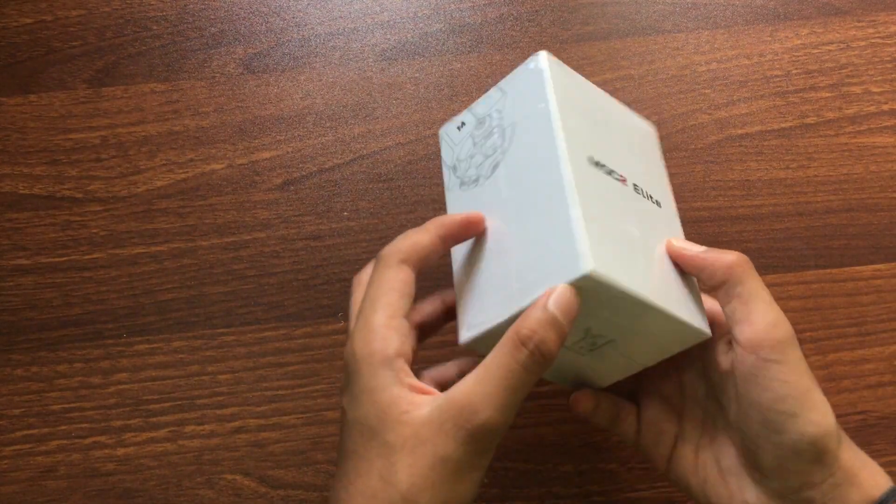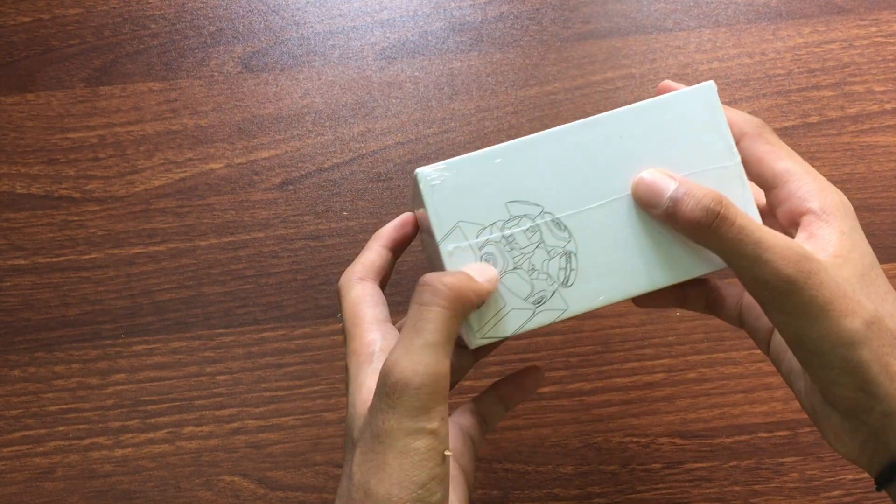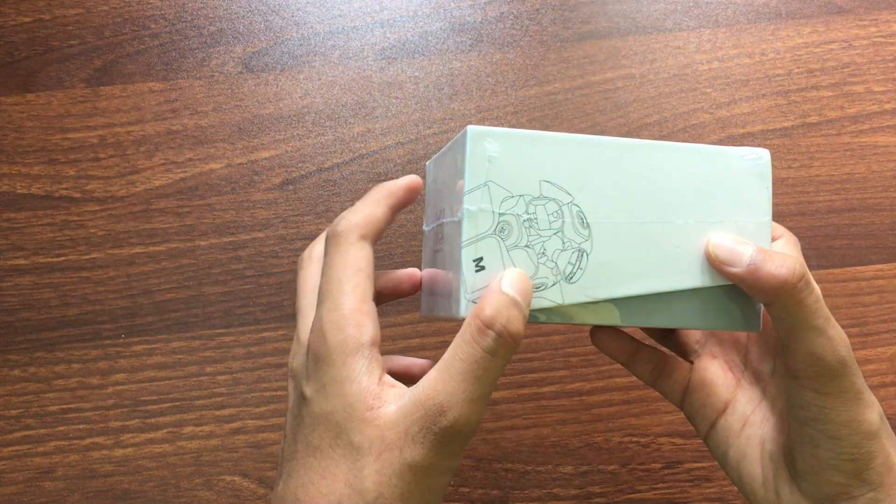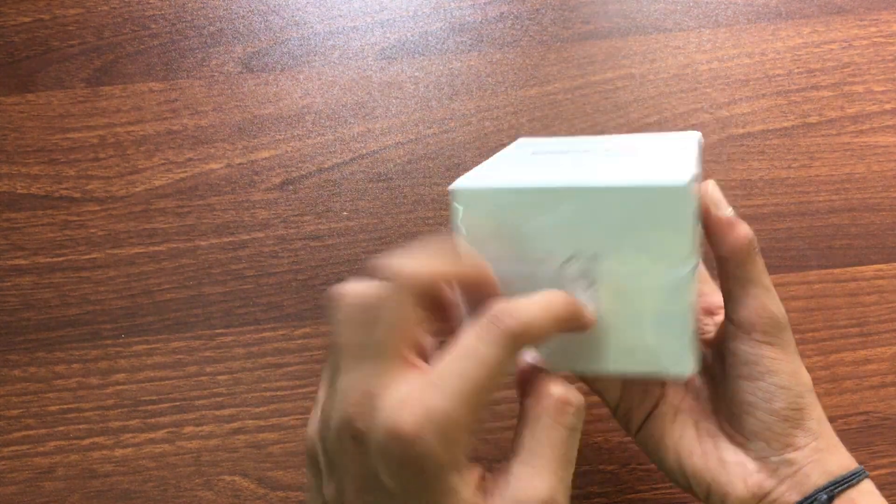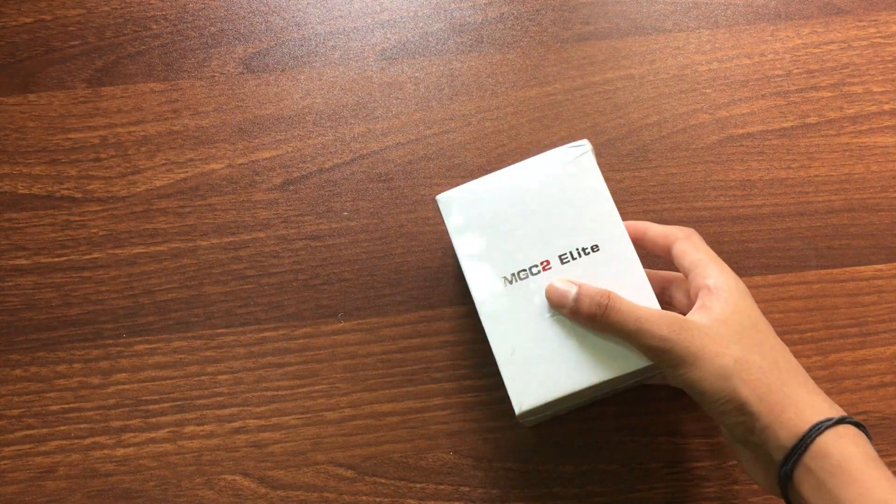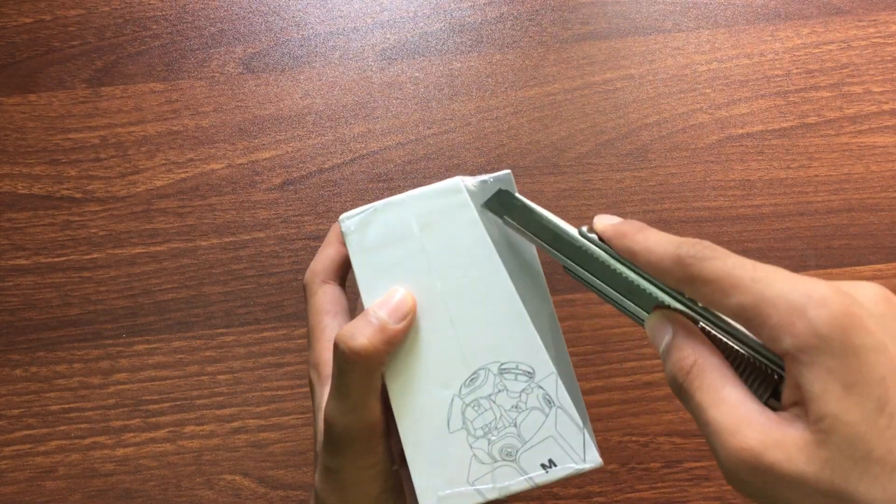Now let's move on to the next puzzle. This is the YJ MGC Elite 2x2 and the box is pretty cool. The internal is shown here. It says MGC here and YJ MGC Elite. So let's open this up. Good to see that it's wrapped completely, so you have to open this. Let's cut this up.